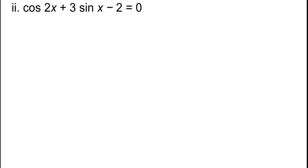Let's talk about question 13B. The question is: solve the equation cos2x + 3sinx - 2 = 0. The best approach here is to make everything in terms of sin.